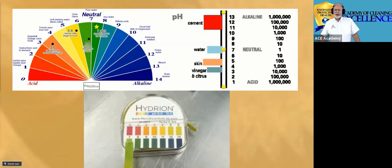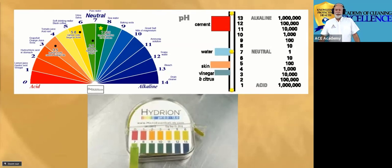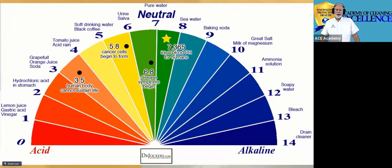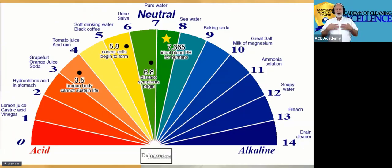As you can see on this chart, your blood has a pH of 7.365. The reason I show you this is because that's what gives you life. If you absorb or inhale a chemical, it's going to have a direct effect on the blood in your body.